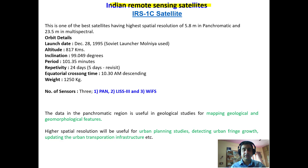Among Indian satellites, IRS-1C is one of the best satellites, having the highest spatial resolution of 5.8 meters in panchromatic black-and-white imagery and 23.5-meter resolution in multispectral imagery. It was launched in 1995 at an altitude of 817 kilometers and has a temporal resolution (revisit time) of 24 days, meaning we get an image of the same area after a period of 24 days. It has three sensors: Panchromatic (PAN), LISS-3, and WiFS.